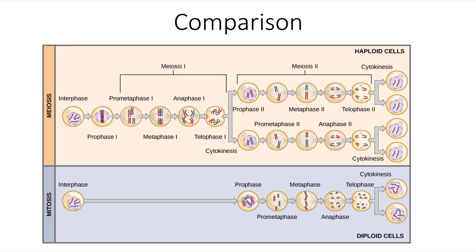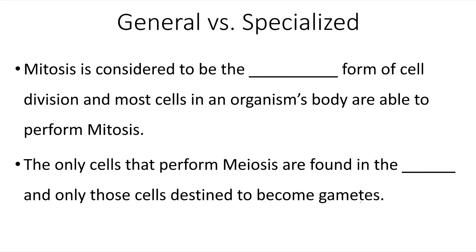When we look at comparing mitosis and meiosis, they both start with interphase. Meiosis actually has two rounds of division: first, the homologous chromosomes are separated from each other in meiosis I; then the sister chromatids are separated from each other in meiosis II. For mitosis, it's only those sister chromatids that are separated through the regular stages of division. Mitosis is considered to be the general form of cell division, and most cells in an organism's body are able to perform it. The only cells that perform meiosis are found in the gonads — and only those cells that are destined to become gametes.